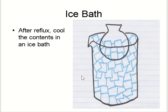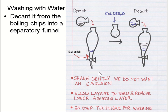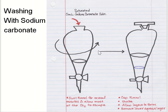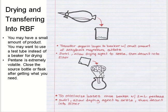After reflux, use an ice bath to cool the product. Then wash your product with water using a separatory funnel — shake and remove the aqueous layer from the lower side, and take the upper layer as your product. After washing with water, wash with sodium bicarbonate in the same way and collect the product from the upper layer. After that, dry it and transfer into a filter paper. You may want to use a test tube instead of a beaker to minimize product loss.